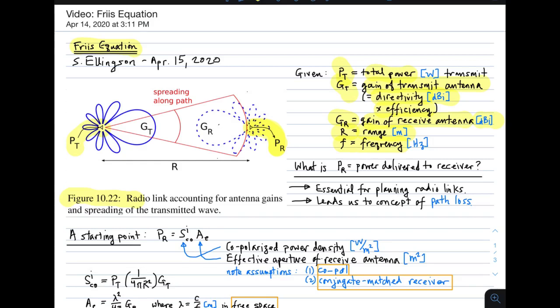So the question is, given all these things, what is the power delivered to the receiver? And as I've already noted, this is essential for planning radio links. And it will also lead us to the concept of path loss. Path loss is a term which is used quite often in this business.